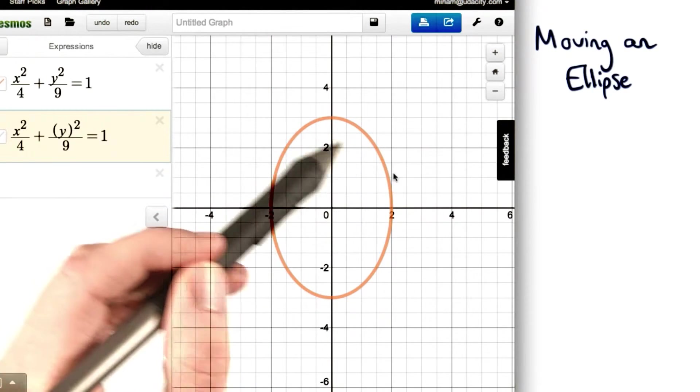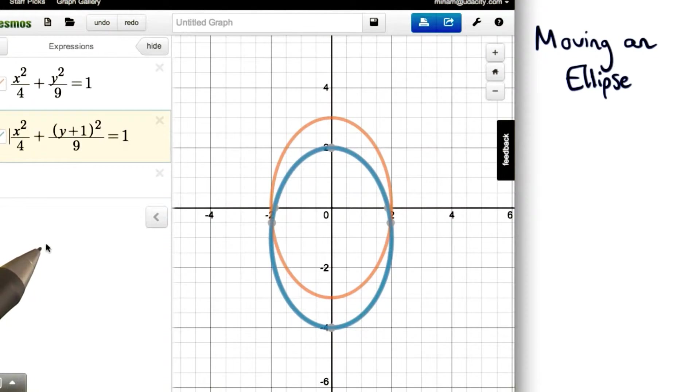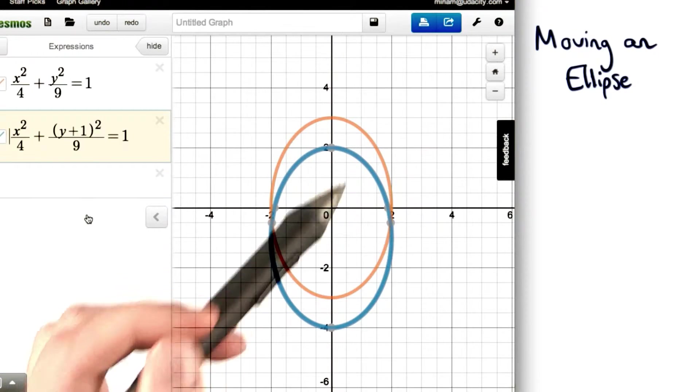So now let's say if we were looking at our original ellipse, and we want to move it down, instead of subtracting from y, we'll add to y. So if we add one to y, we'll get a shift downward. Our entire orange ellipse moved down one unit, and we get this new blue ellipse.